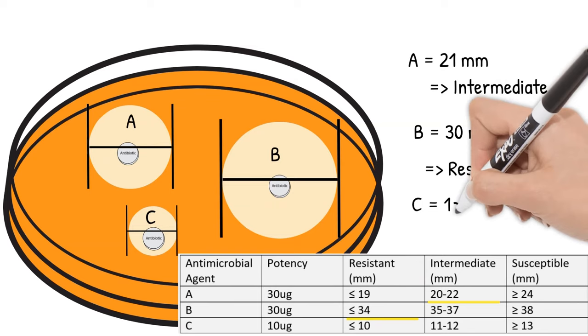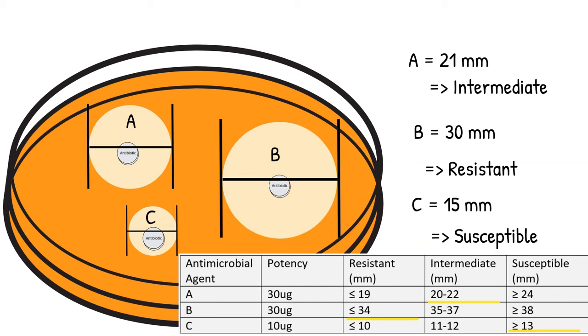Next, Disc C. It looks like 15 millimeters. When I compare to the table, it is susceptible.